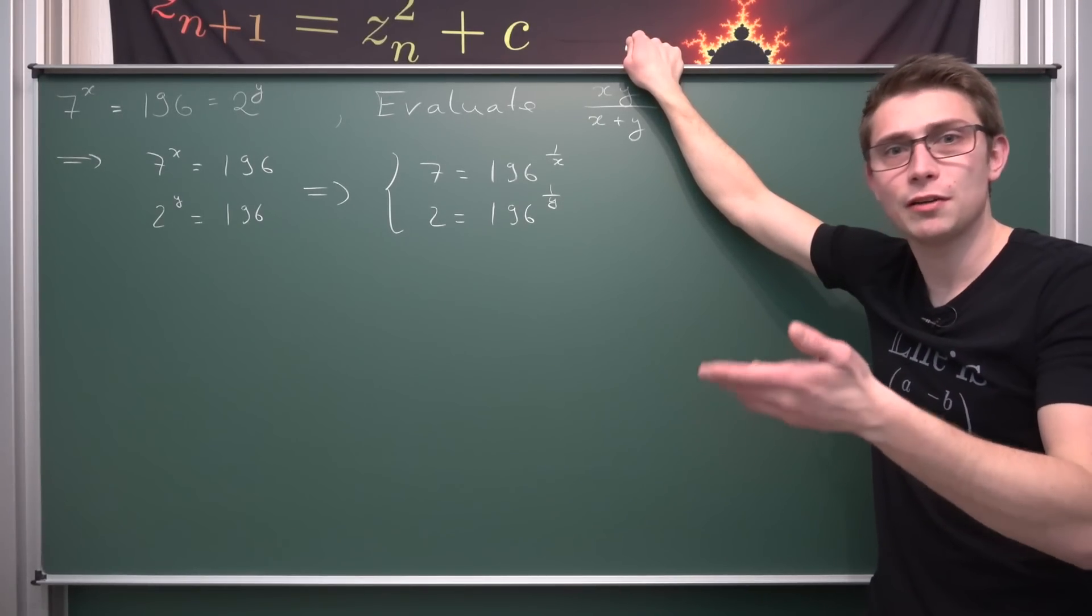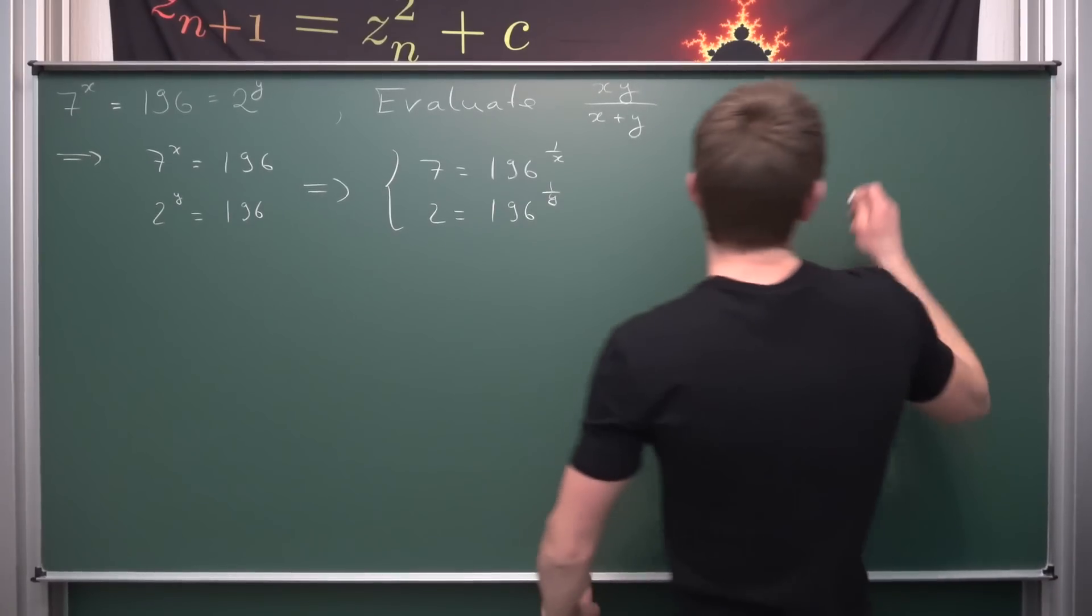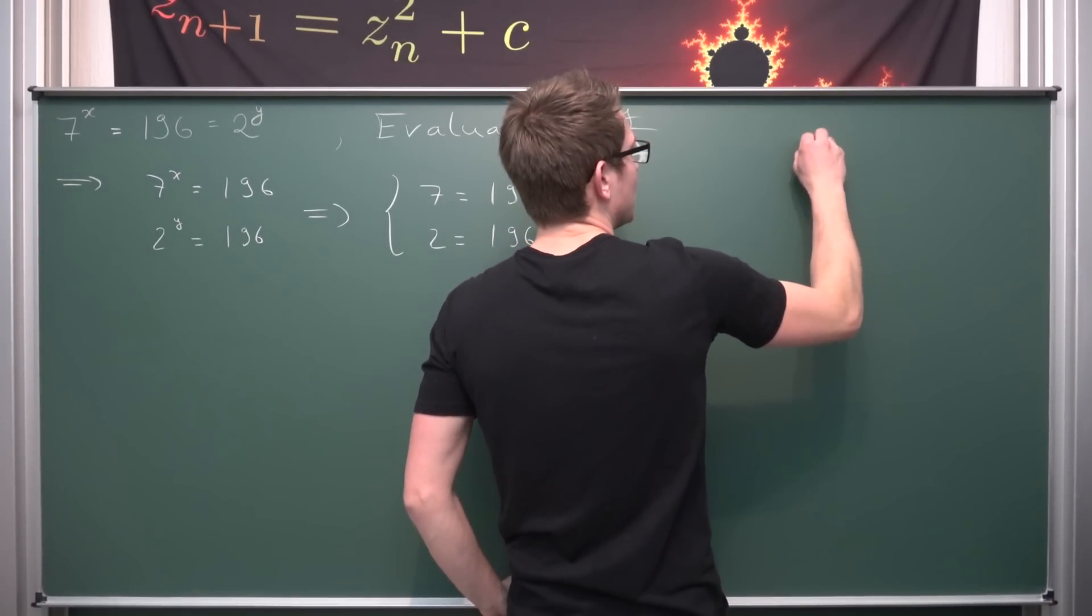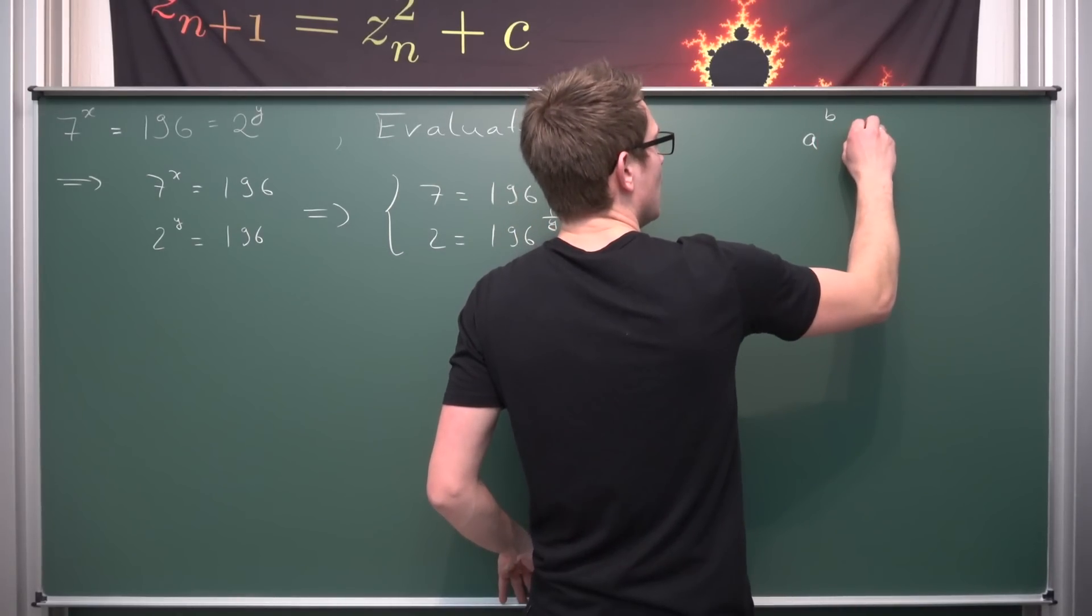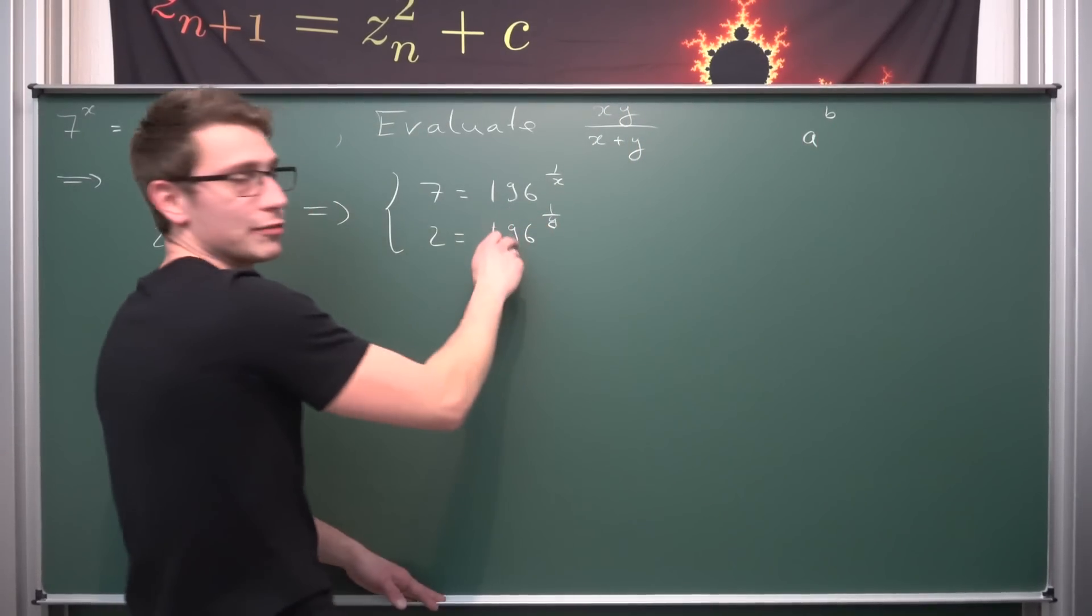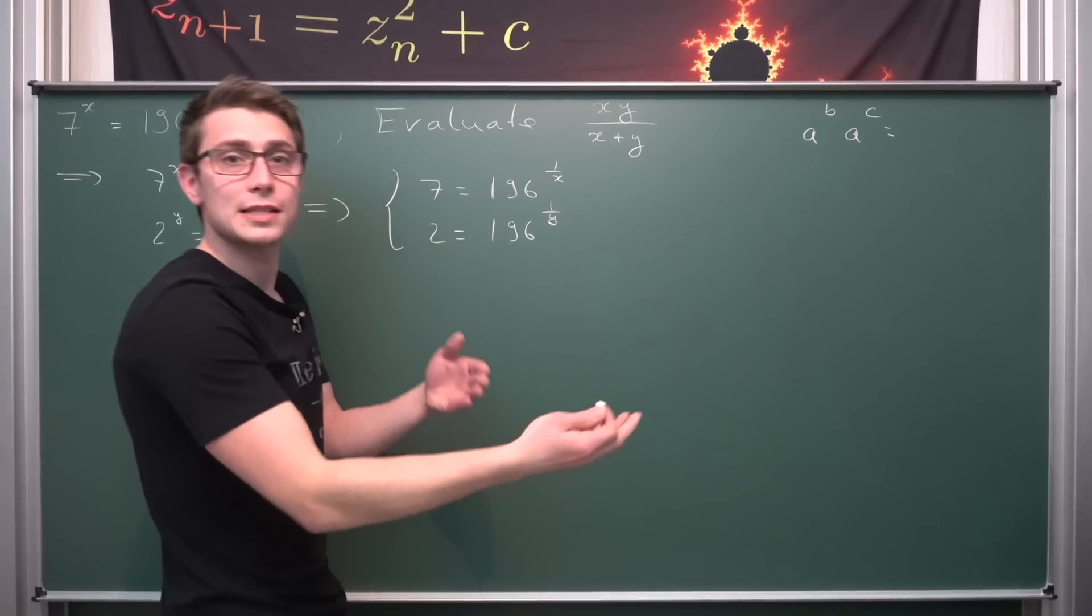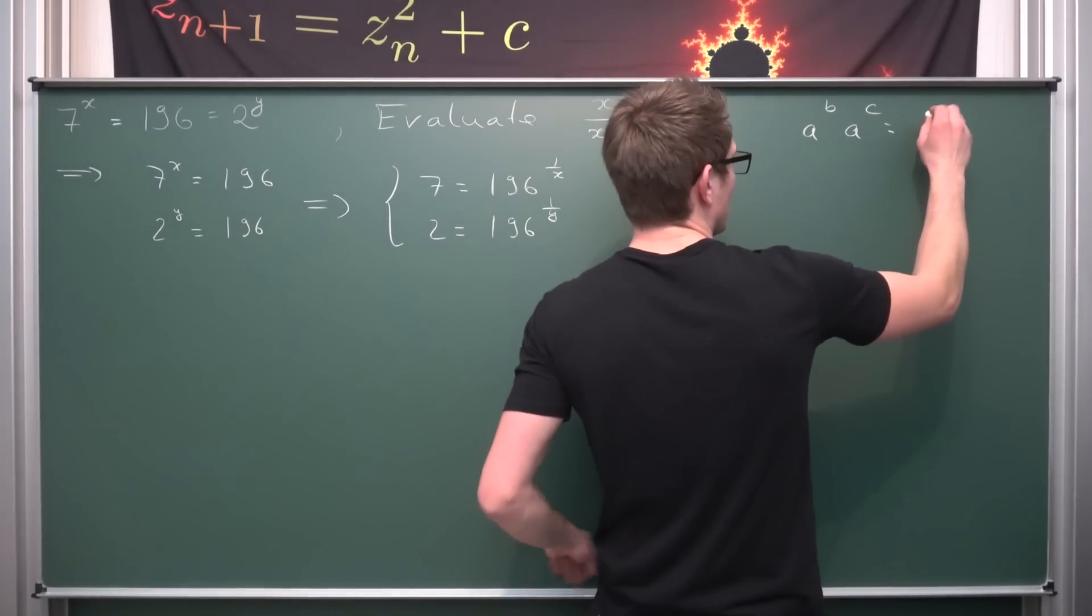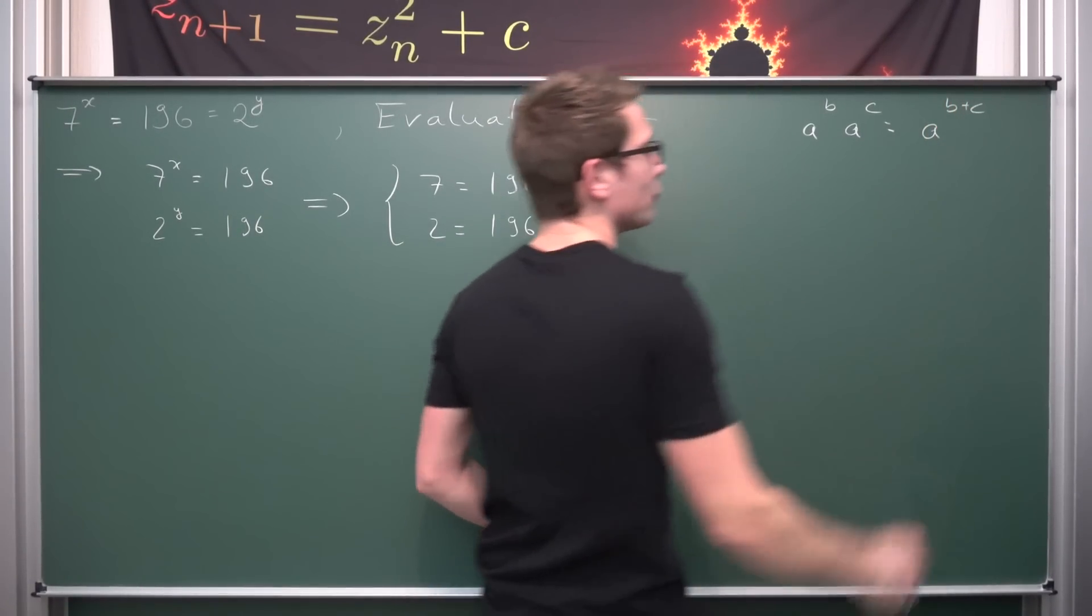So what can we do with exponentials that actually works out nicely? Exponential functions in general follow a very nice functional equation. Namely that if you have a to the b power times, since we have the same base, a to the c power, we are going to get, since they have the same base, by the functional equation of the exponential function, that this is a to the b plus c power.